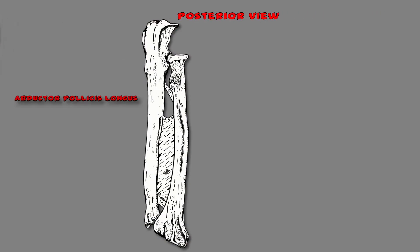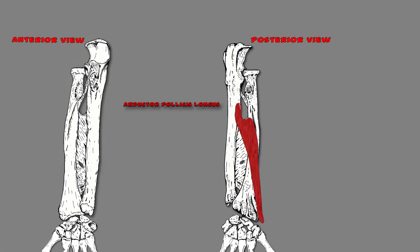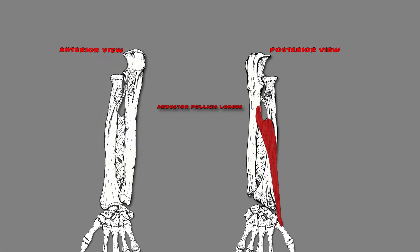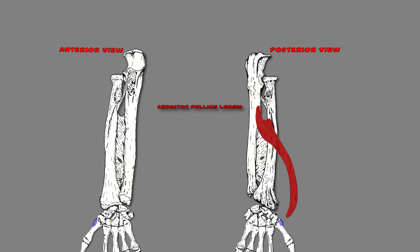Let's focus on the posterior view. The abductor pollicis longus originates on the interosseous membrane, the posterior side of the radius and ulna bone. Longus means it's a long muscle, so it inserts far away on the pollicis. We know pollicis means the thumb, so it inserts on the first metacarpal bone.